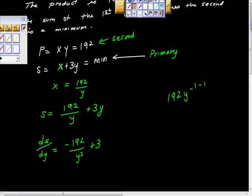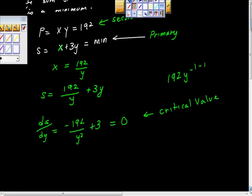Of course, now we're looking for a critical value. So we're going to set that thing equal to 0, looking for a critical value here. So hopefully you're with me on this, looking for this critical value. If I find the critical value, I get 192y squared, I'm sorry, over y squared is equal to 3.